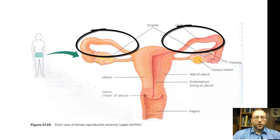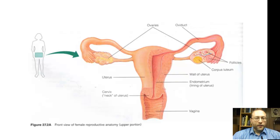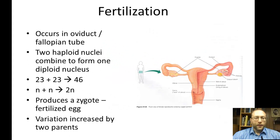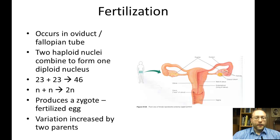Fertilization occurs in the oviduct, also called the fallopian tube. One thing frequently asked on the Regents is that the diploid number is restored here. The two haploid nuclei in the egg and in the sperm combine, so the number of 46 chromosomes in humans is restored — n plus n equals 2n. Once you have the fertilized egg, it's now called a zygote.